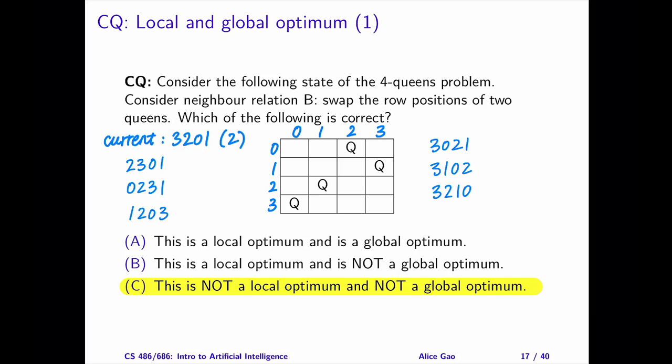Next, let's calculate their costs. Take the state 2301 as an example. There are four pairs of queens attacking each other: 0 and 1, 2 and 3, 0 and 2, and 1 and 3. This state has a cost of 4. Let's calculate the cost of all the six neighbors.